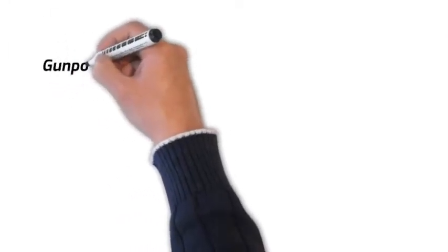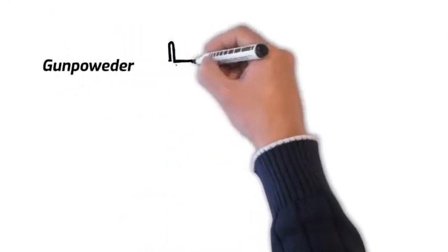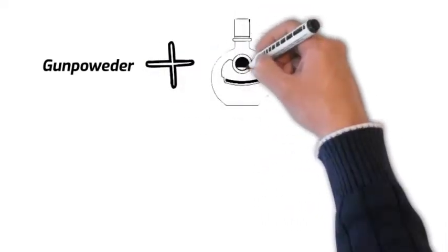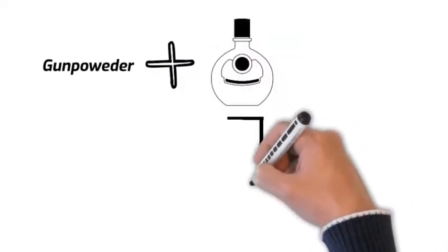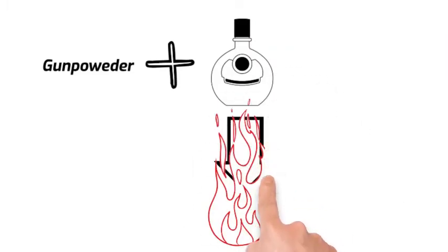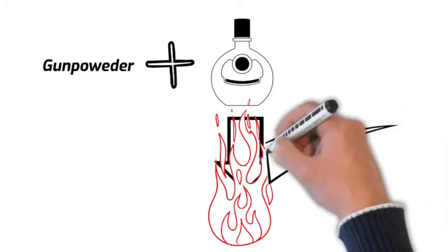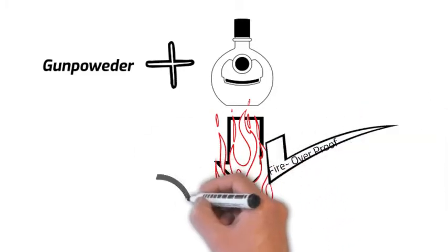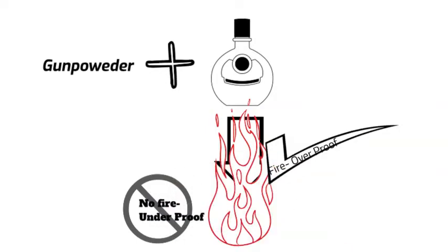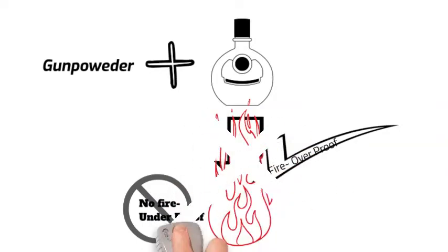Then another method was introduced in which gunpowder was soaked in a spirit. If the gunpowder still burns, then it was rated over proof spirit. Otherwise the spirit was called under proof spirit. This method was comparatively less variable but still not that reliable.